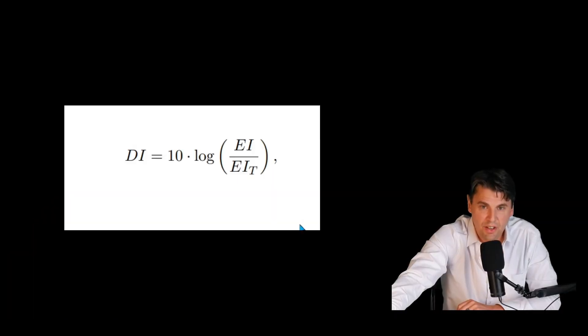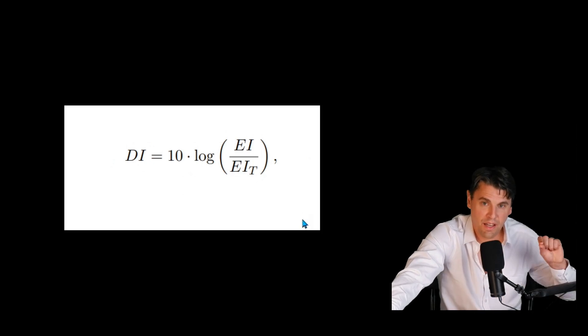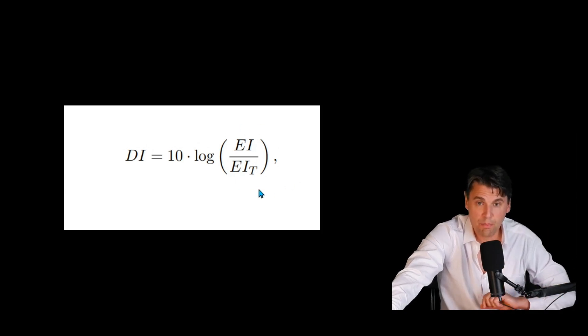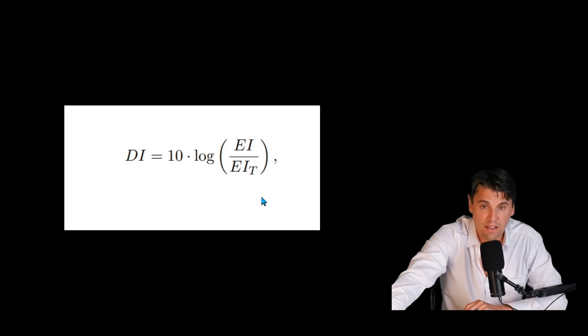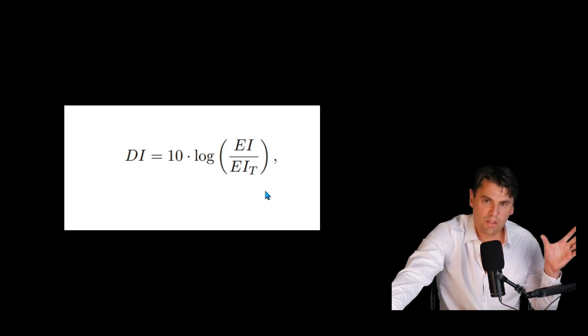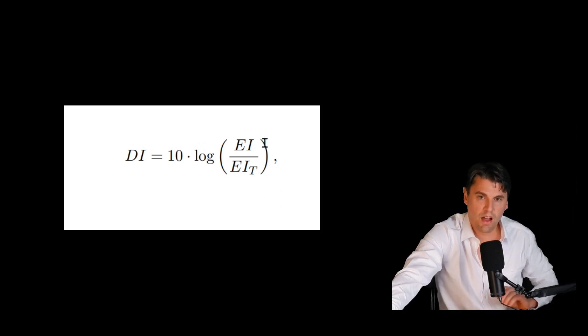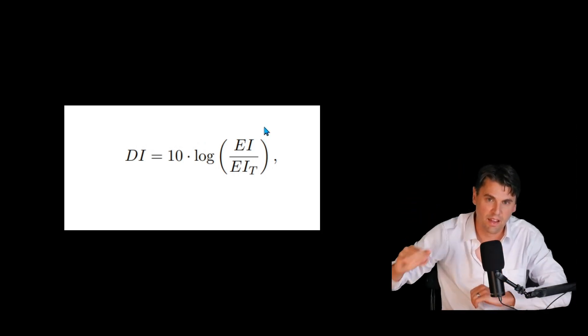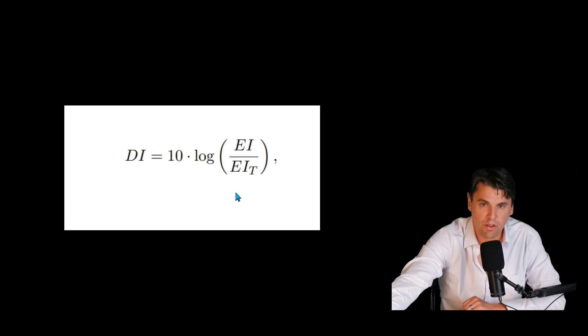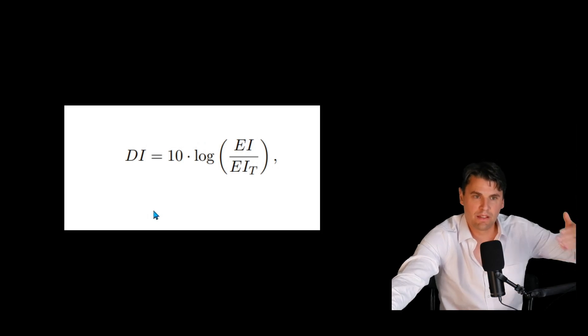Then the definition of our deviation index: if you take your exposure index and you divide by your exposure index that you were targeting, that's kind of the input to the deviation index. And then we also take the logarithm, just so that this won't vary too quickly. The logarithm will kind of compress it and make it vary a little bit more slowly, will give us what we call the deviation index that we can track and see how we're doing as a function of time.